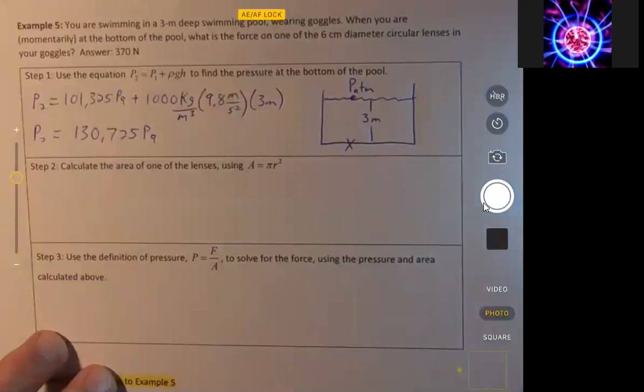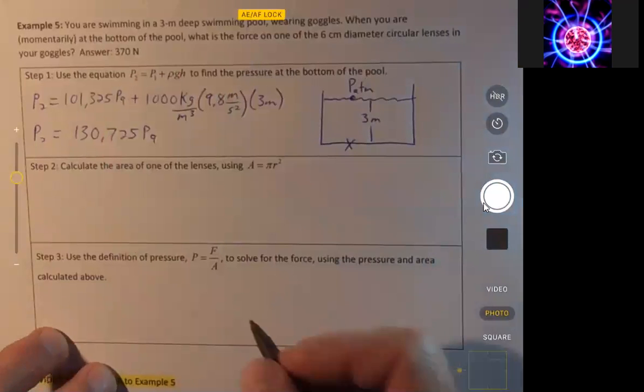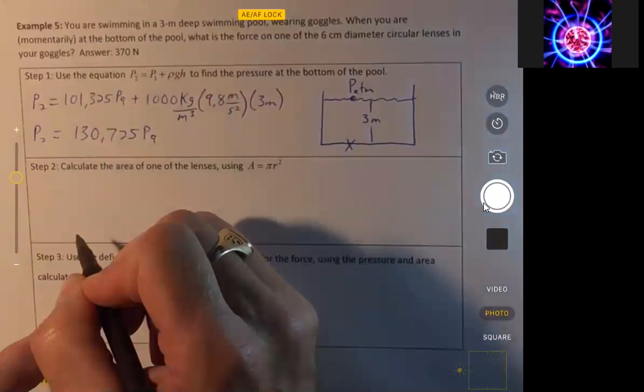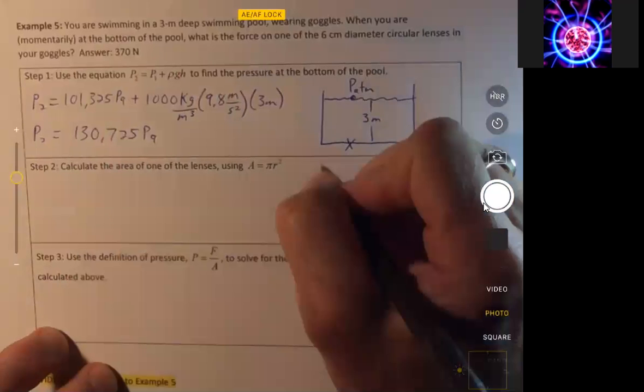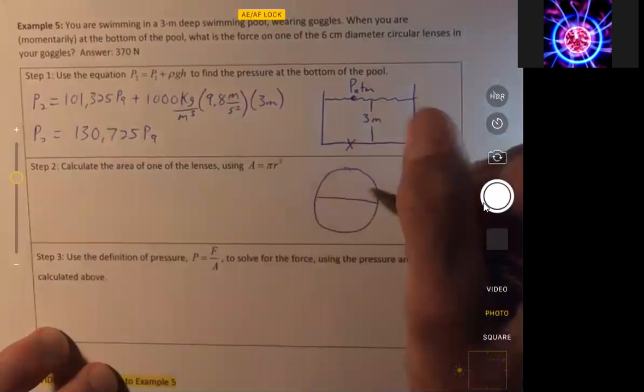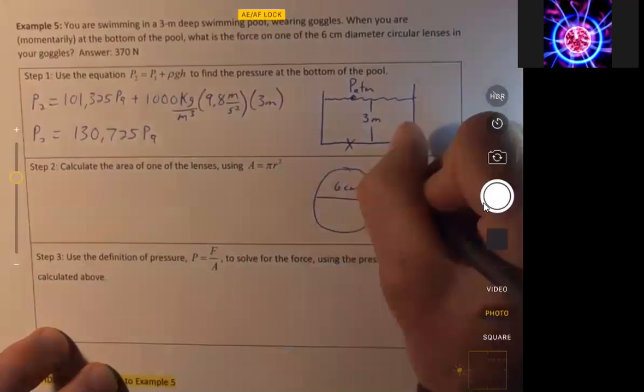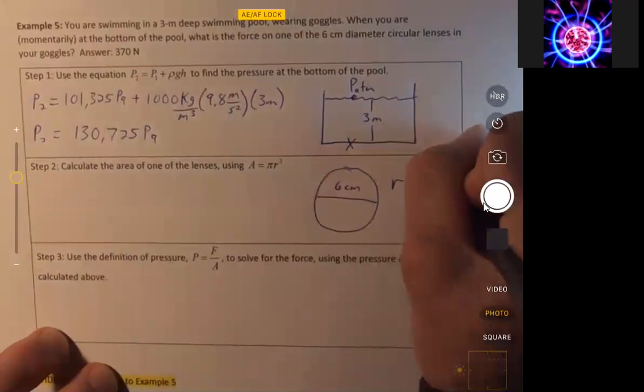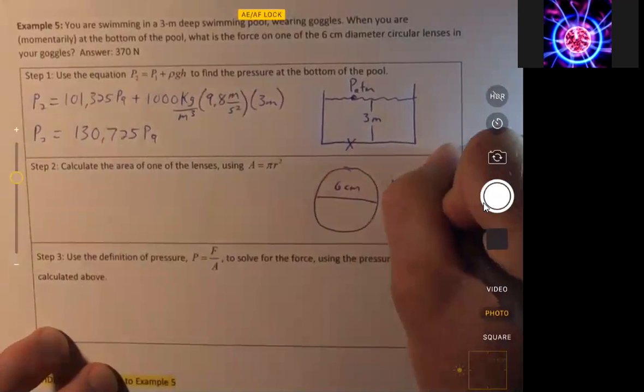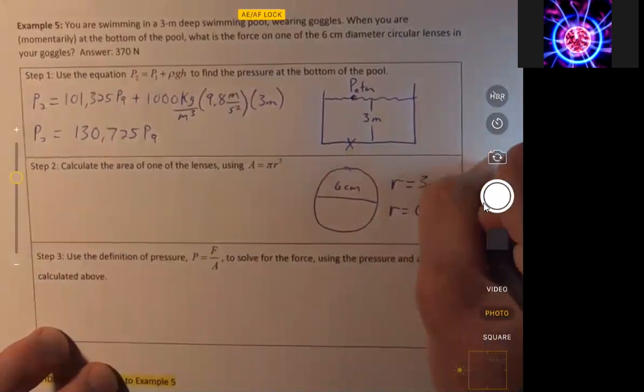Now we're going to find the area. The area of a circle is πr². We were given the diameter of six centimeters, and so that means the radius is three centimeters, or 0.03 meters,